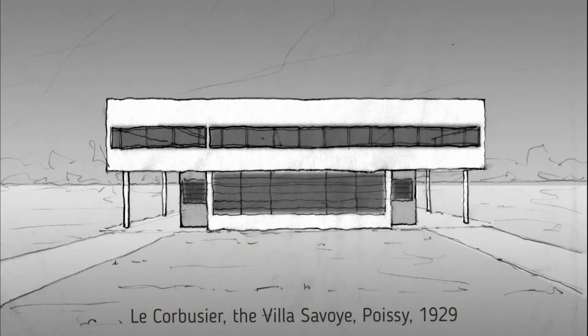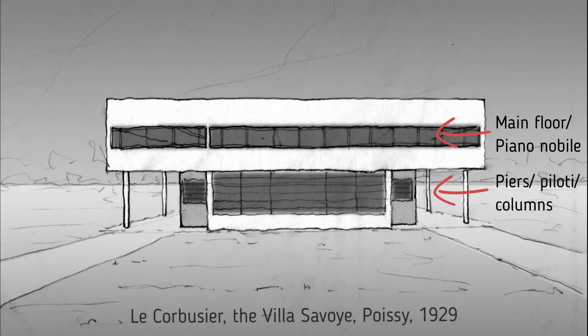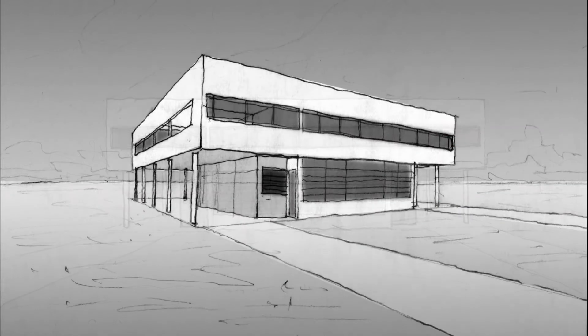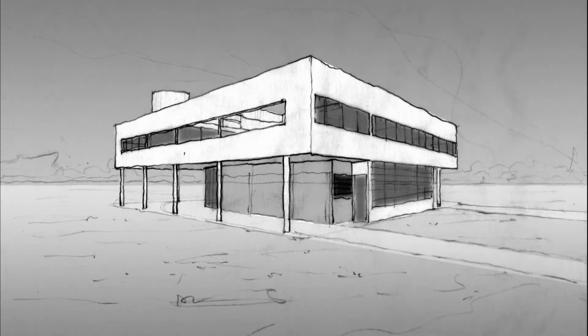The Villa Savoye of 1929, in Poissy just outside of Paris, represents the pinnacle achievement of Le Corbusier's early purist villas. The main body of the house, the Piano Nobile, is raised on piers and for the first time is expressed fully in the round, in concert with its pastoral setting.